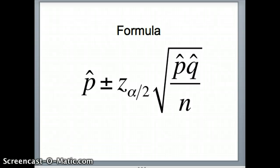The formula that we're going to use for our confidence interval for the proportion is p-hat plus or minus z-alpha by 2 times the square root of p-hat q-hat over n.